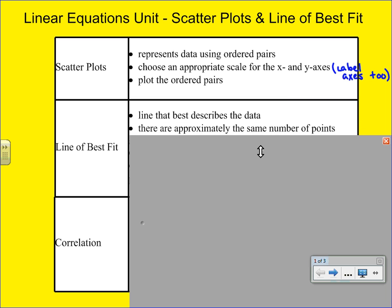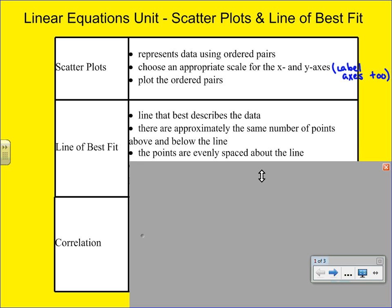The one thing we like to show is that there are approximately the same number of data points above and below the line. So you wouldn't want your line of best fit to have 10 points above it and only 3 points below it. You'd want to make sure that it kind of splits your data evenly. Secondly, you want to make sure that the points are evenly spaced around the line. So you don't want it to be hugging some of the points really close while others are far away.